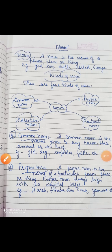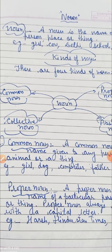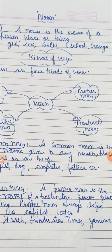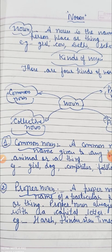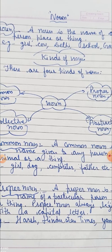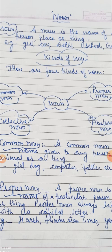Good morning students. Now we are going to start a new topic of grammar, that is noun. So let's start this. What is noun? A noun is the name of a person, place or thing. Noun can be a place, can be a person, or can be a thing.